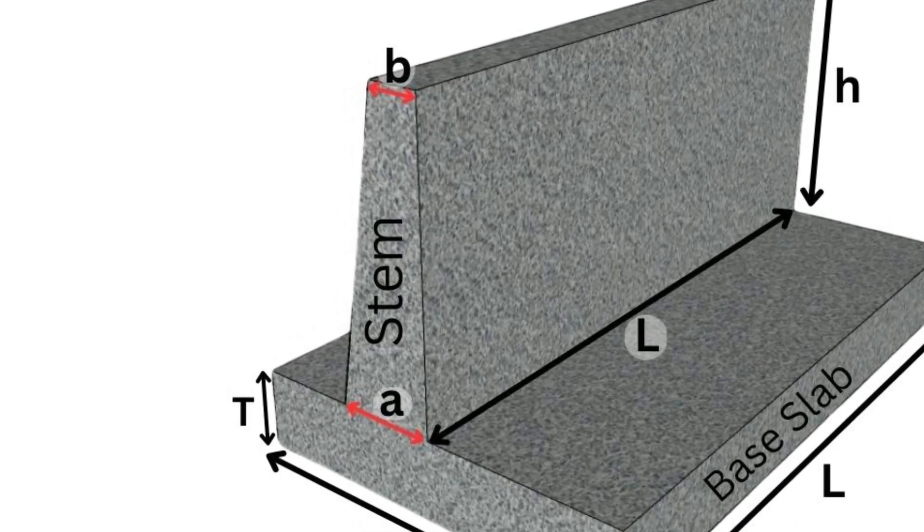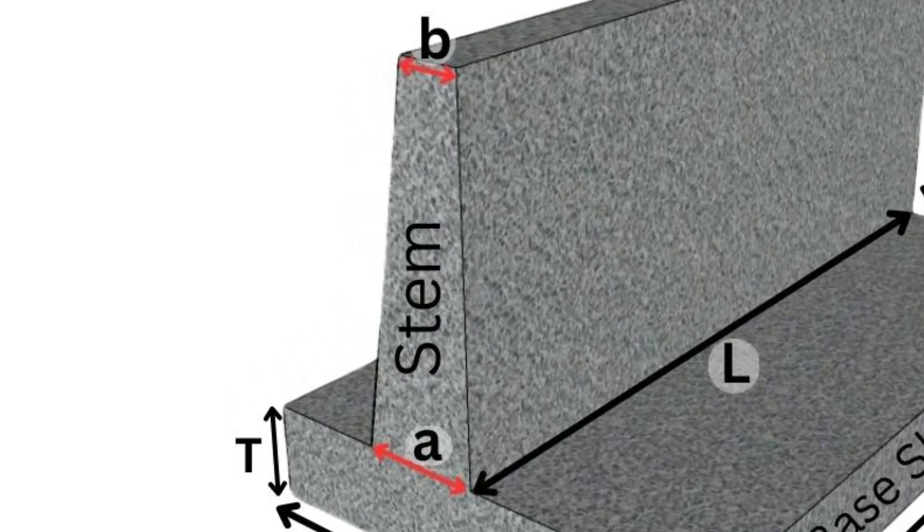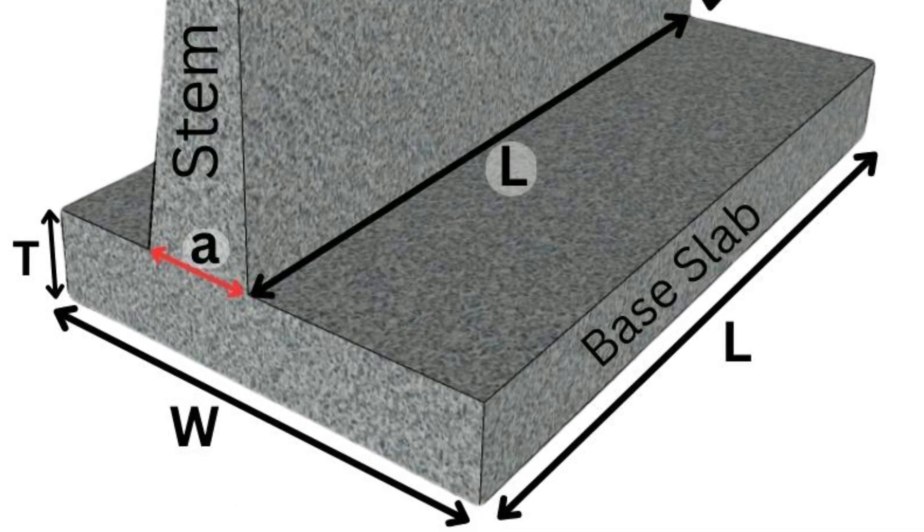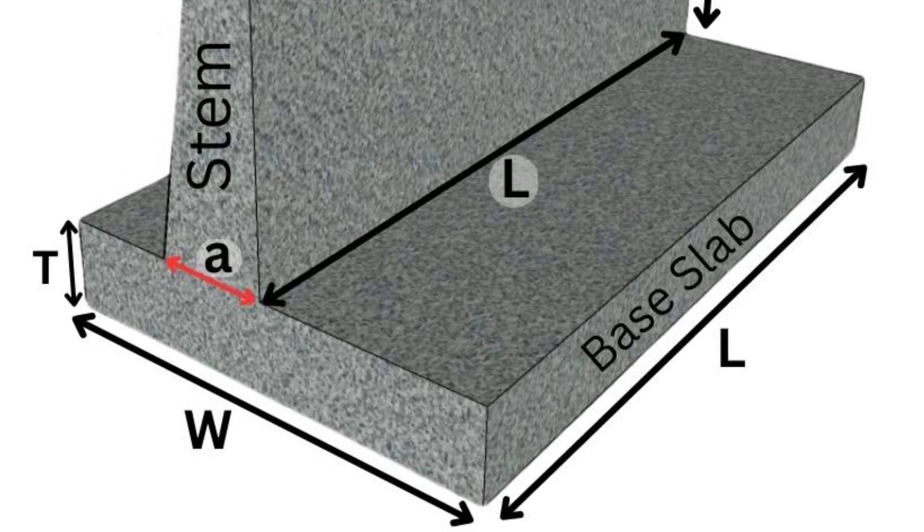The vertical section of the wall that extends above the base slab and supports the weight of the soil is known as stem. The base slab is an important component of a retaining wall to resist the lateral pressure of soil.